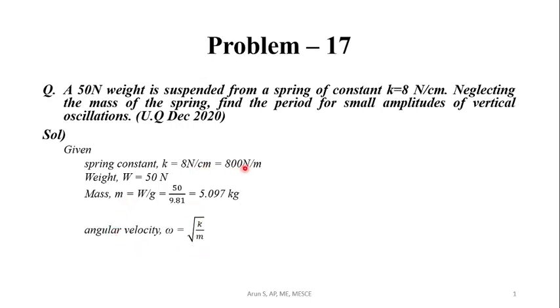k value is 800 N/m, m is 5.097. Substituting, we can find omega to be 12.528 radians per second. Once we know omega, we can find the period of oscillation T = 2π/ω.